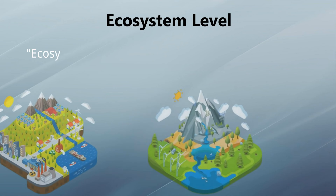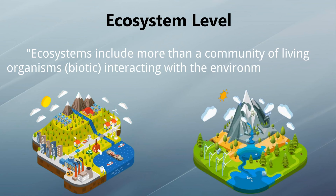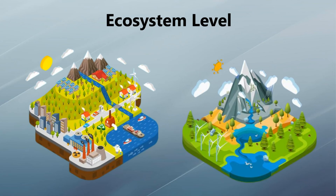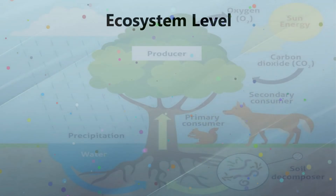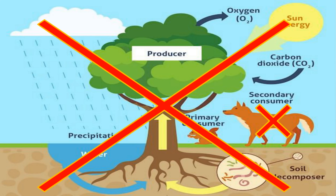At the ecosystem level, ecosystems include more than a community of living organisms (biotic) interacting with the environment (abiotic). Ecosystems vary in size, climate, and components, but every ecosystem is an independent functioning unit of nature. Every living organism in an ecosystem depends wholly on the components of its ecosystem. When a component of an ecosystem is damaged or lost, the ecosystem will be affected in its entirety.